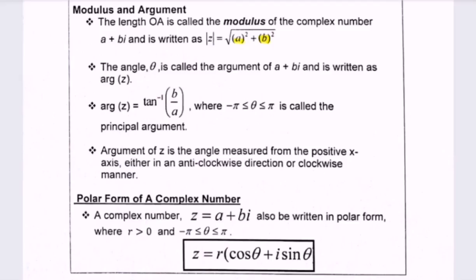Next, the argument of z is the angle measured from the positive x-axis, either in an anti-clockwise direction or clockwise manner.